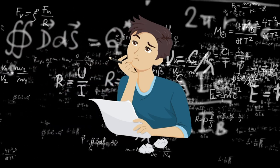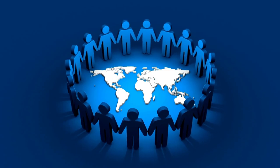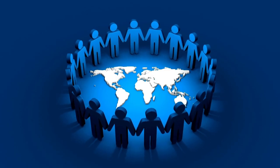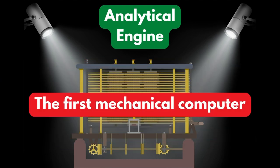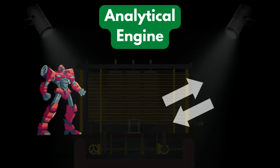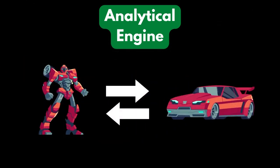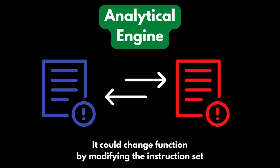However, Babbage was up to something entirely different in the meantime, something that would change the world. This is where we see the emergence of the concept of the Analytical Engine, the first mechanical computer that was fully programmable and automatic. The engine's most revolutionary feature was the ability to change its operation by changing the instruction set.